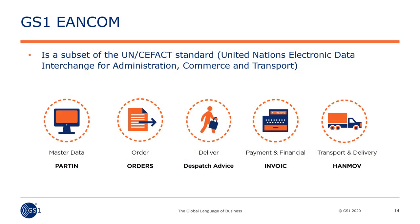For GS1-EANCOM, these are some of the more common messages transacted. PARTIN is location information with related operational, administrative, commercial, and financial data. Orders specifies goods or services and specific relevant quantities, dates, and locations of delivery. Dispatch advice specifies details of the goods dispatched under agreed conditions — it informs the consignee what materials were dispatched and when, allows prepared goods receipts, and cross-checking with orders. Invoice is sent by the seller to the buyer claiming payment for goods or services supplied. HANMOV is sent to a logistics service provider to identify handling services on products and optionally the movement of specified goods.